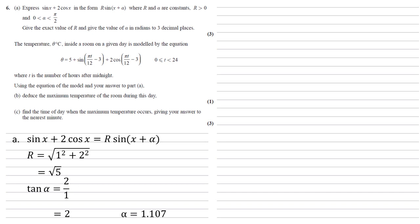For part b, the temperature theta degrees Celsius inside a room on a given day is modeled by the equation theta equals 5 plus sin(pi t over 12 minus 3) plus 2 cos(pi t over 12 minus 3), where t is the number of hours after midnight.